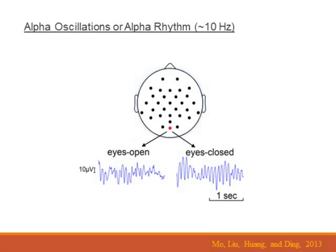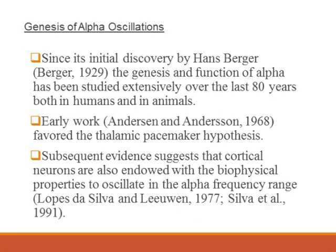It was discovered in the 1920s by Hans Berger. Since its initial discovery, the genesis and the function of alpha has been studied extensively, both in humans and in animal models.